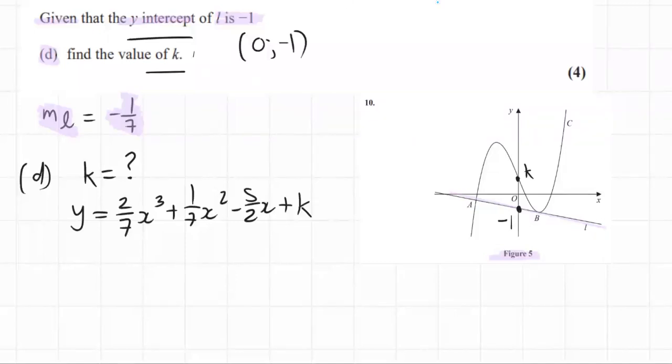So one way we could solve that is to somehow find this k, which you would need maybe a point on the graph that you could sub into the curve and then you could solve the unknown k. But I don't have any points on this graph that are easily to solve. So my plan of attack for this question is to take the curve equal to the line. At these two points A and B, the curve equals the line.